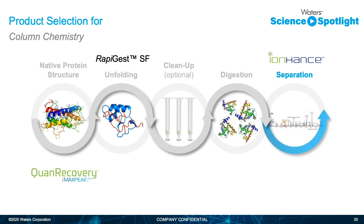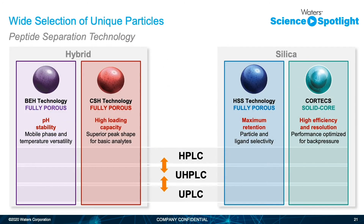Moving on to column chemistries — they are either your most comfortable playground or a completely foreign language, but I promise they are excellent tools to keep in your toolbox. Waters offers a very wide selection of unique particle offerings with both hybrid and silica-based particles, both fully porous and solid core particles, all with various bonded and unbonded options. I often refer to BEH and HSS technologies as the grandfather and grandmother of chromatography. BEH is the original hybrid particle, HSS is a more traditional silica particle, and then CSH and CORTEX are really the new kids on the block. CSH stands for charged surface hybrid, and CORTEX is a silica particle with a solid core providing really excellent efficiency.